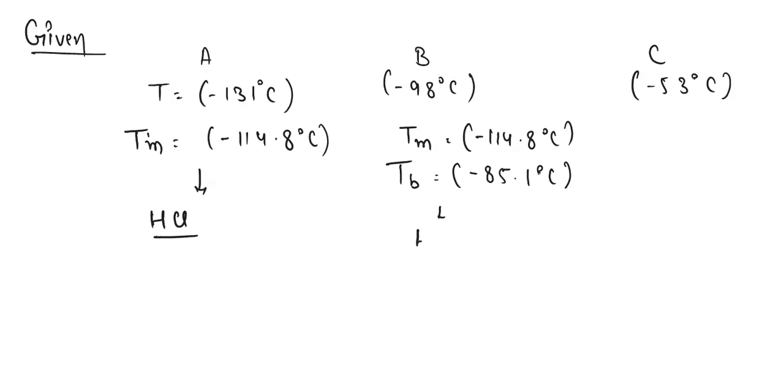In container B, HCl molecules are in liquid state, while in container A they are in solid state. In container C, HCl molecules are in gaseous state.